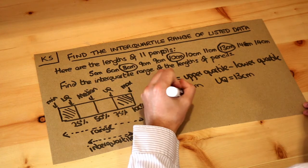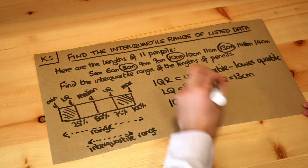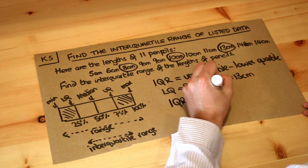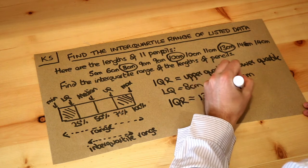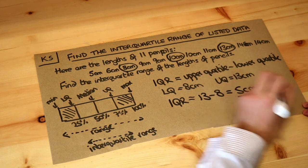The interquartile range is just the difference between the two quartiles: 13 minus 8, which is 5 centimetres. And that's the final answer.